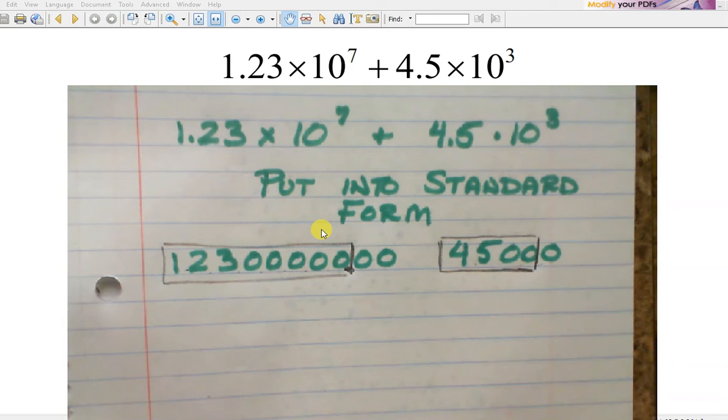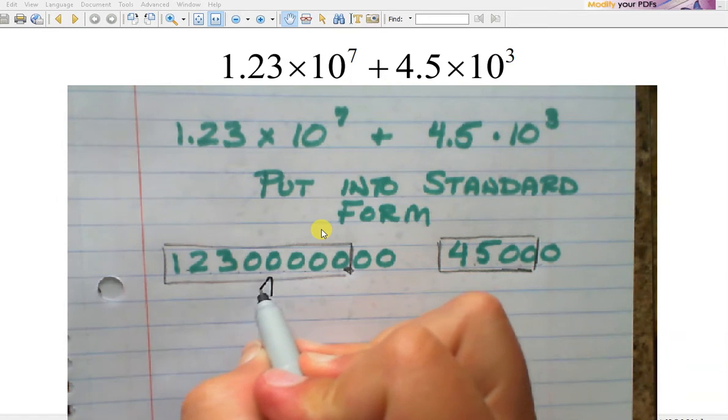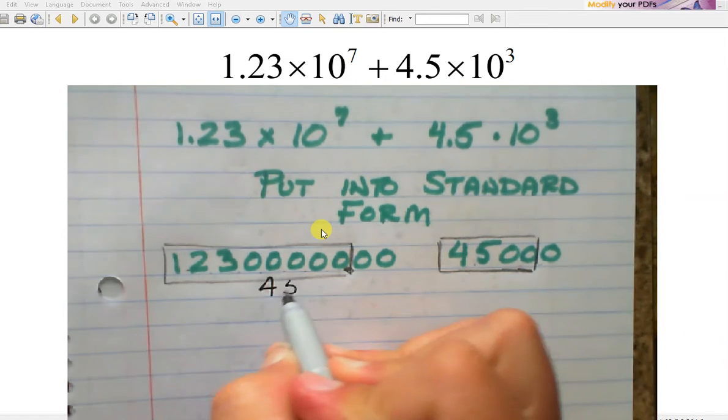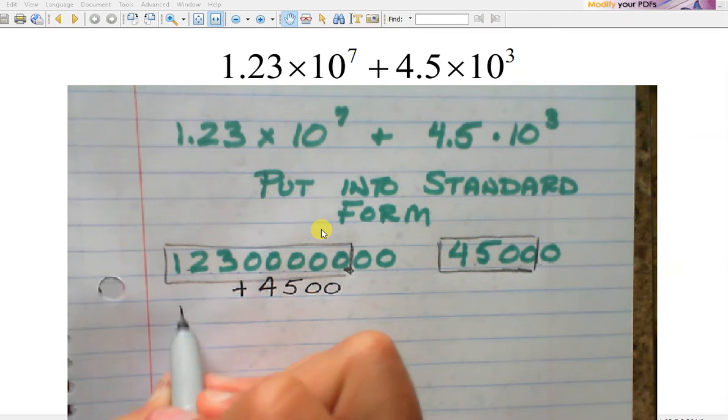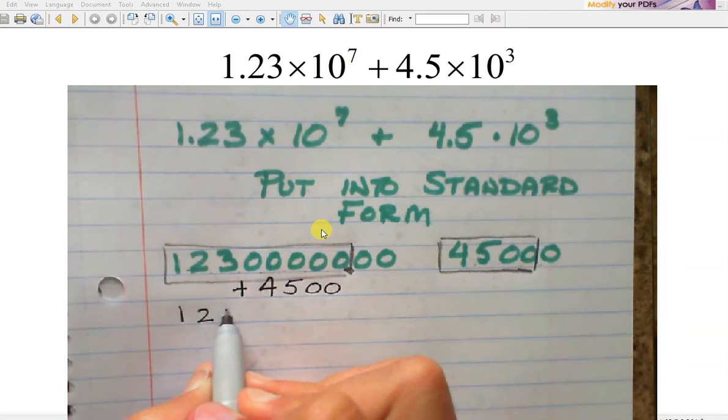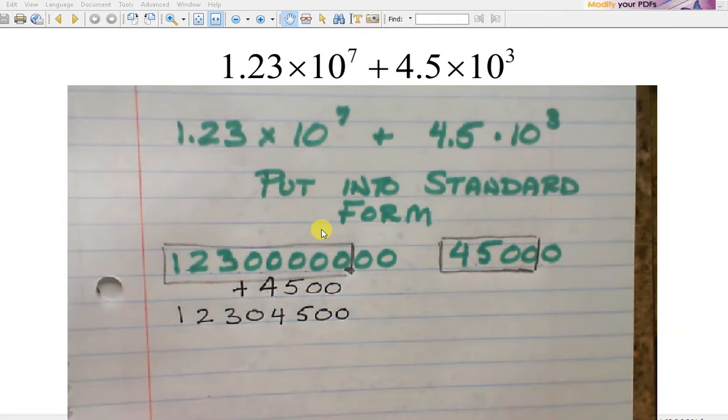Now using my calculator, I'm going to add those numbers together. Or I could actually just do it without a calculator. This is 4,500. So it's going to give me 1, 2, 3, 0, 4, 5, 0, 0. But I'm okay if you use a calculator.